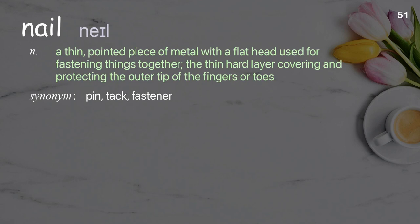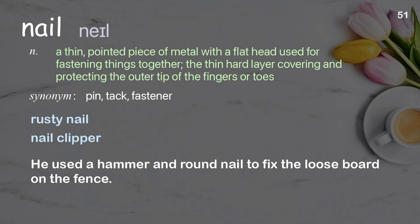Nail. A thin, pointed piece of metal with a flat head used for fastening things together. The thin hard layer covering and protecting the outer tip of the fingers or toes. Examples: rusty nail, nail clipper. He used a hammer and round nail to fix the loose board on the fence.